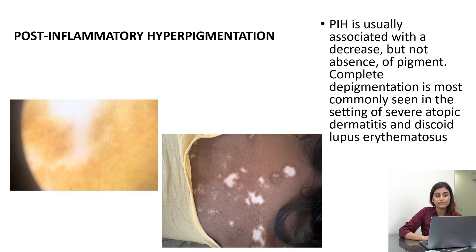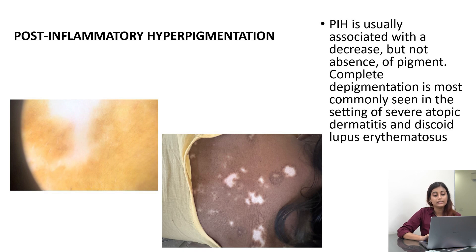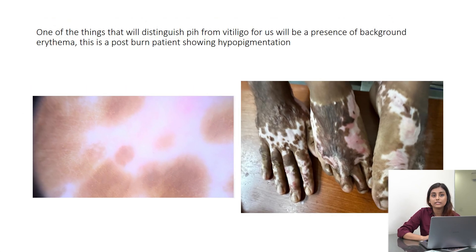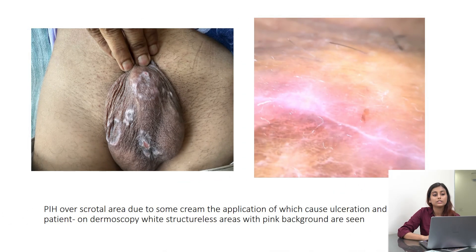Post-inflammatory hypopigmentation is associated with a decrease in pigment, not an absence of pigment. In contrast, here we see an absence of pigmentation as seen in diseases like DLE — this patient has disseminated DLE with absence of pigmentation. In PIH, one classic feature is that you won't just see decreased pigmentation; you would also see erythema, visible under a dermoscope. This post-burn patient has hypopigmented lesions; another patient applied a cream to a genital lesion which left them with ICD and post-inflammatory hypopigmentation, showing a background of erythema and white lesions.